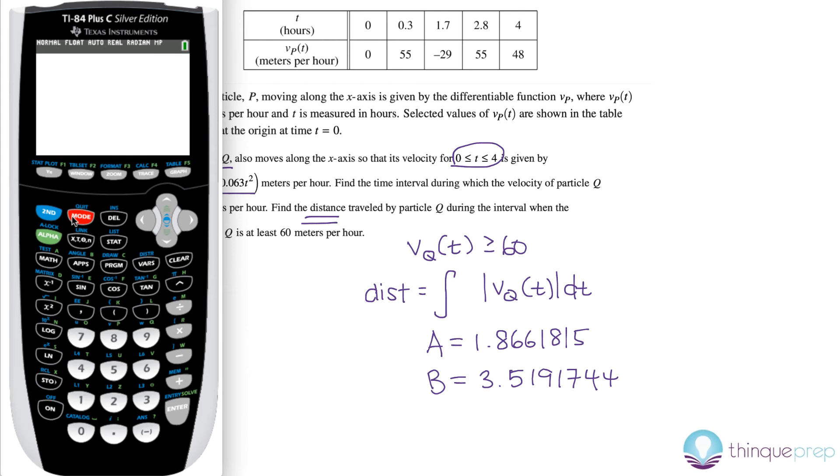So, I'm going to do this really fun thing that I like to do. I'm going to use the store function. So, 1.8661815. And then if you hit this store button here, this actually allows you to store into certain letters on your calculator. So, I'm going to store that into A. So, every time I access A for the rest of my tests, it's going to be that number. And I suggest you do that for all questions throughout the whole test so you don't lose track of all the different numbers because there's going to be a bunch of numbers that you're going to have to use. And then I'm going to do the same thing for B, 3.5191744. And I'm going to store that into letter B.